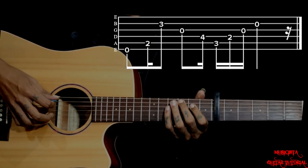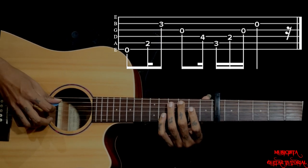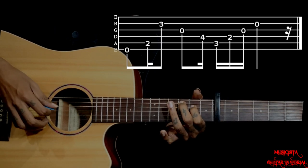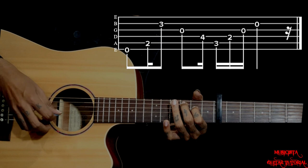Then we have a Cmaj7 chord. So my middle finger is on 5th string 3rd fret and index finger on the 4th string 2nd fret. Using these 2 fingers you just pluck on the right hand. 5 4 3 2.